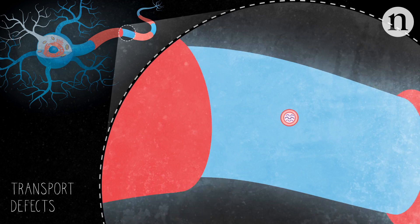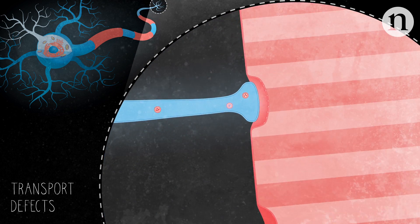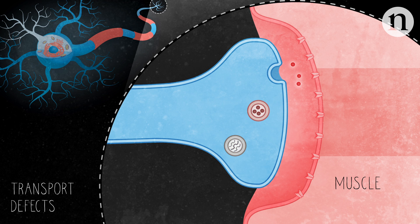These vesicles contain important cell signaling molecules called neurotransmitters. If these can't be moved along the axon or released, the neuron can't send messages to its target cells.